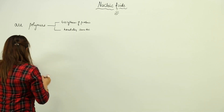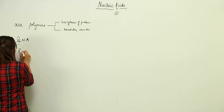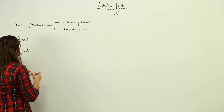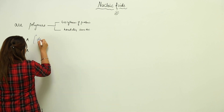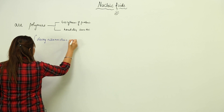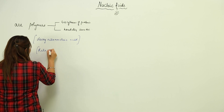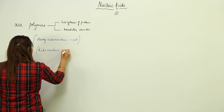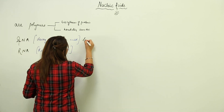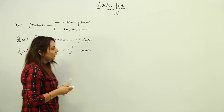As far as nucleic acids are concerned, we have basically two nucleic acids: one is DNA and the other is RNA. Their complete names are deoxyribonucleic acid and ribonucleic acid. DNA is comparatively large and RNA is comparatively small in size.